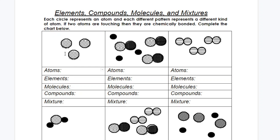Let's look at our first box. I have three circles, so those are three atoms, but they each have the same pattern, which means they are the same element — the same thing on the periodic table. So if I count my atoms, I have one, two, and three. How many different elements do I have? They each have the same pattern, so they are all the same element — I only have one element. Molecules would be the same atoms bonded together, and I don't have any because none of them are touching.